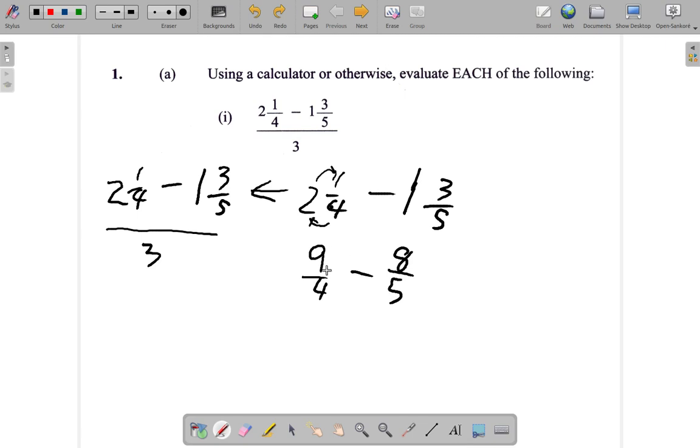So it's 9 fourths minus 8 fifths. You're going to draw your line and find the LCM. The LCM of 4 and 5 is 20. You don't see another smaller number where 4 and 5 can each go into, so I have 20 as the LCM. Remember the next step: 4 into 20 goes 5 times, 5 nines is 45. Minus 5 into 20 goes 4 times, 4 eights is 32.